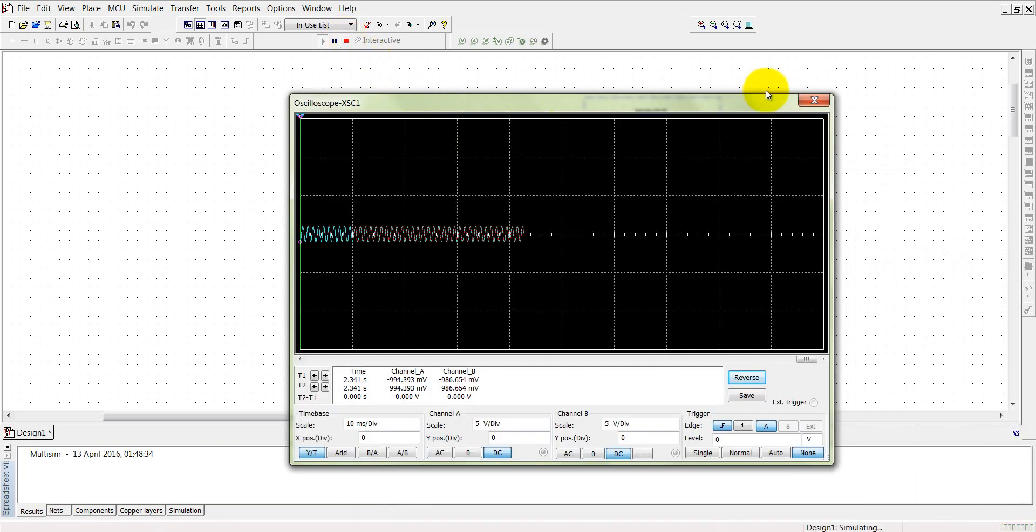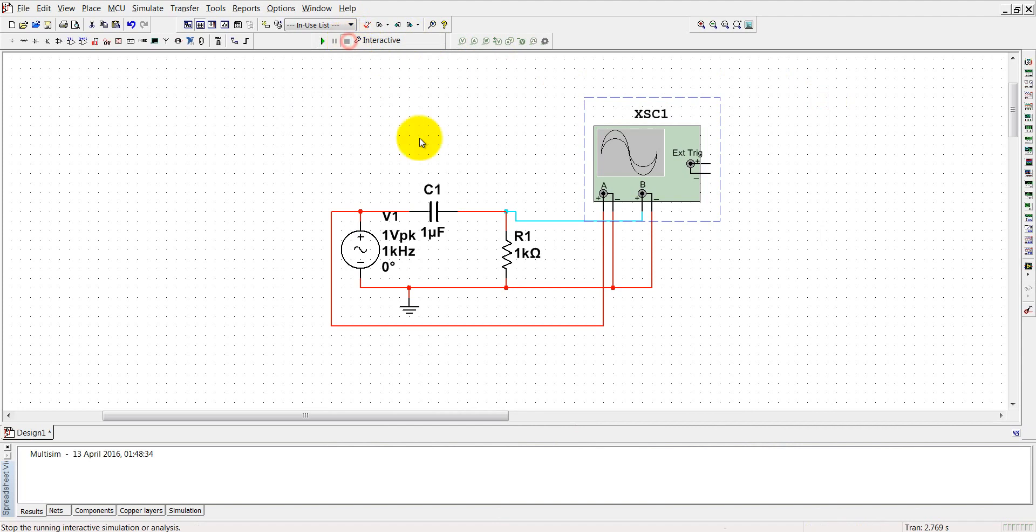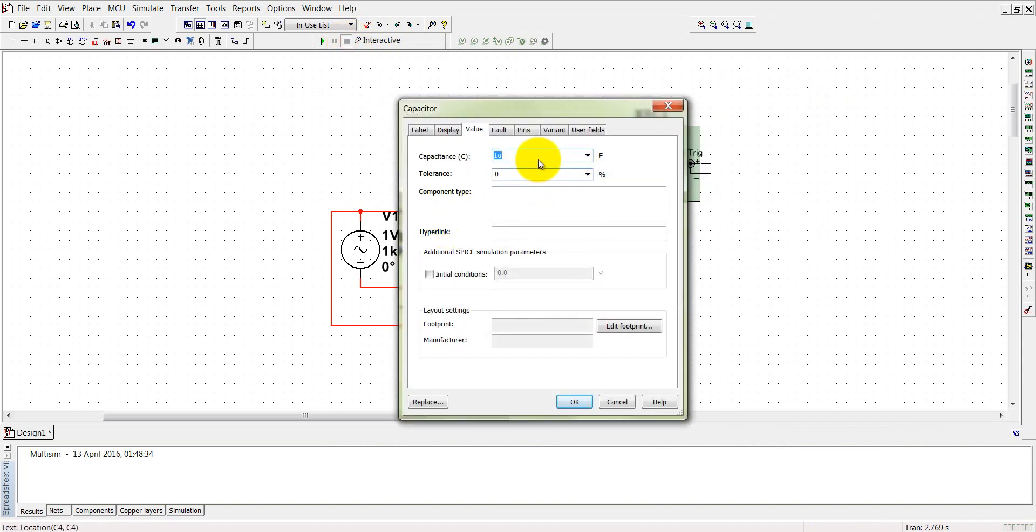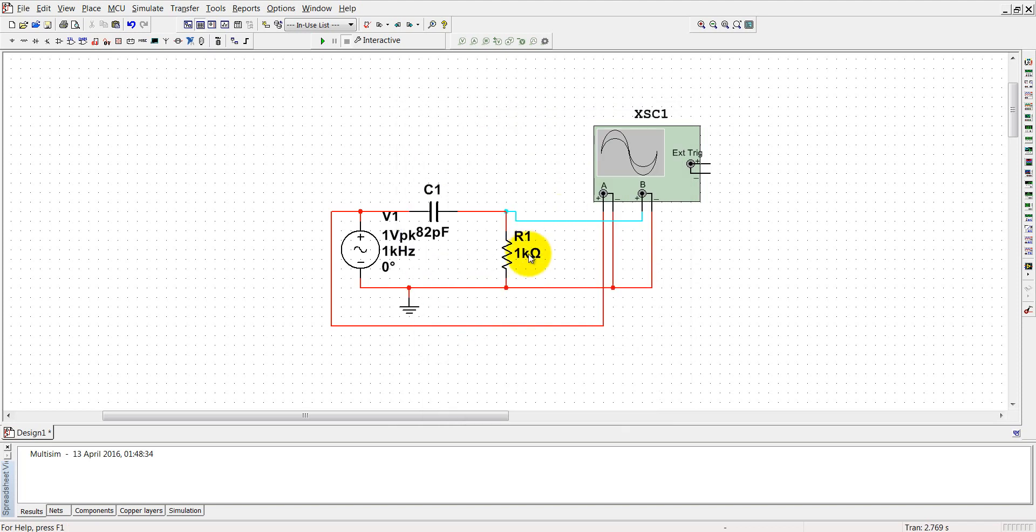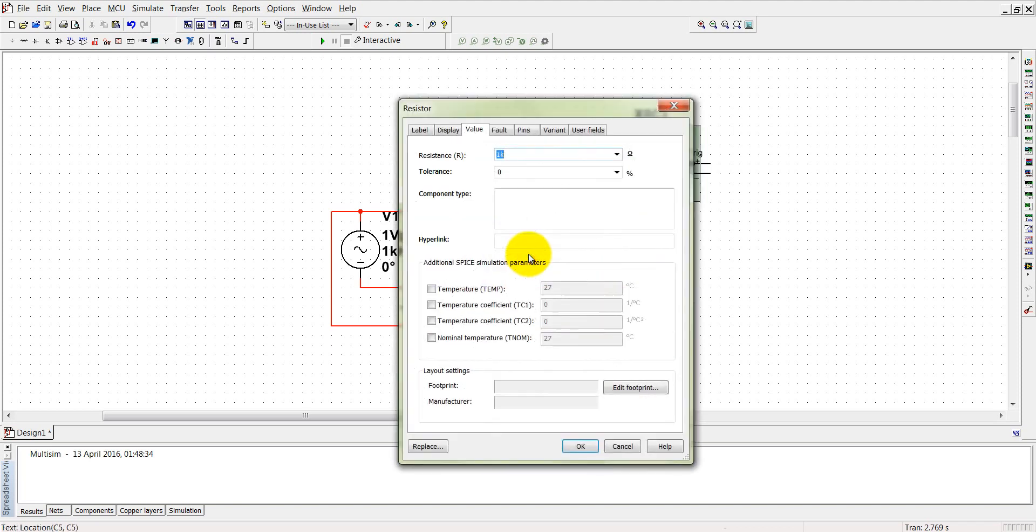Okay, sorry, I have forgot to change the values of the capacitor and resistors. So the C is 82 picofarads in our design, and R is 240 kilo-ohms.